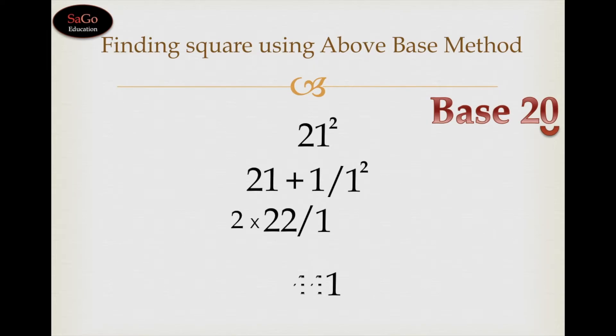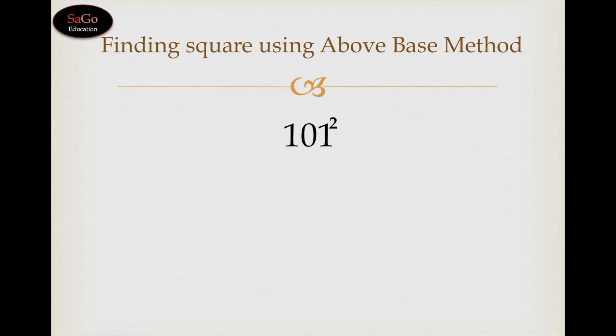Square of 21 is 441. Let's take one more sum, 101 square. Write 101 as it is.